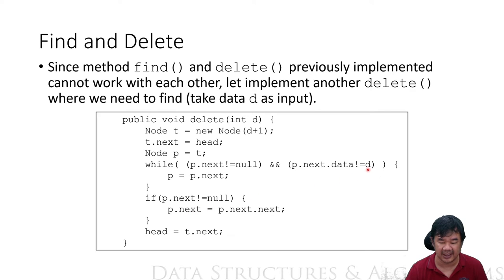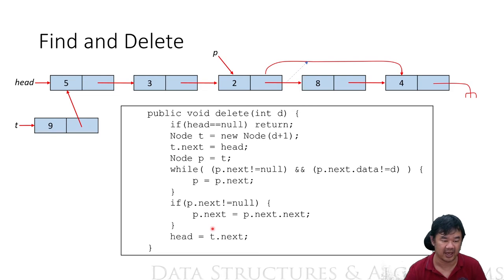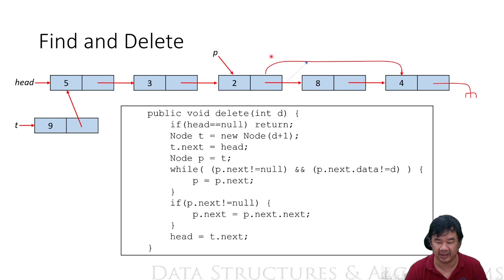This deletes the first occurrence of d found. At the end, set head = t.next. If the data was at the head, t.next skips over the old head to head.next, effectively removing it. If we deleted somewhere else, head = t.next is still the same head, so it's fine.